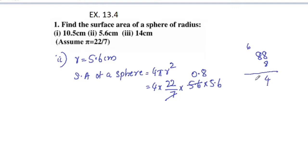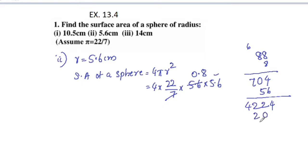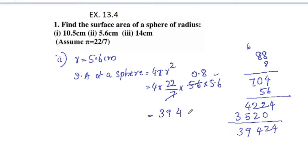64 plus 6 is 70. Continuing the multiplication: we get values leading to 394.24. The steps yield 3924, and placing the decimal point gives 394.24.